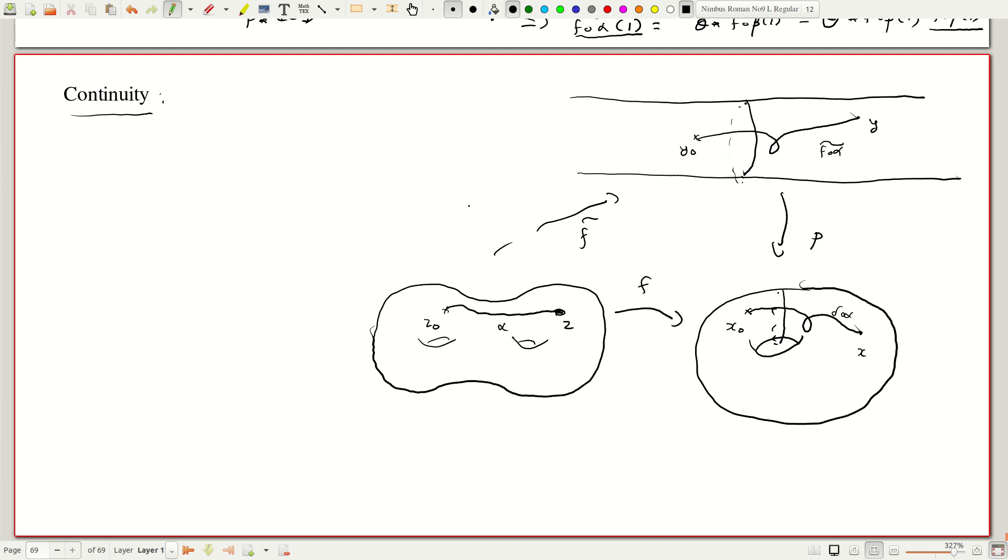And here we really have to use local path connectivity, otherwise we will see that this is false.